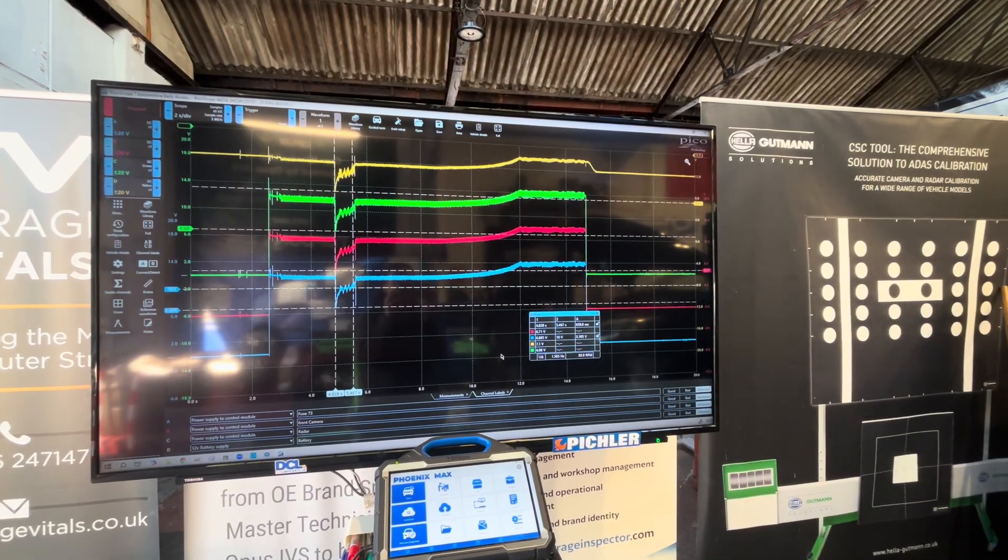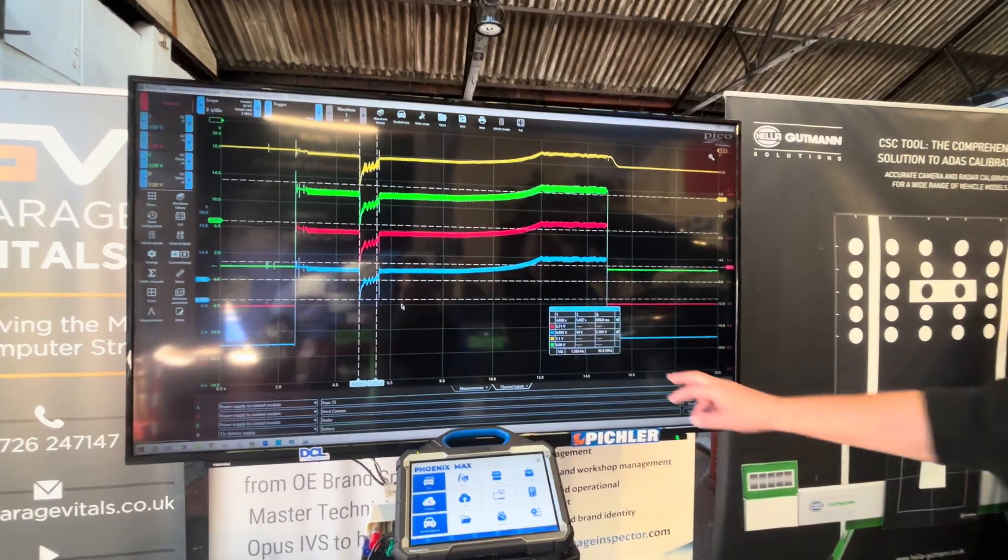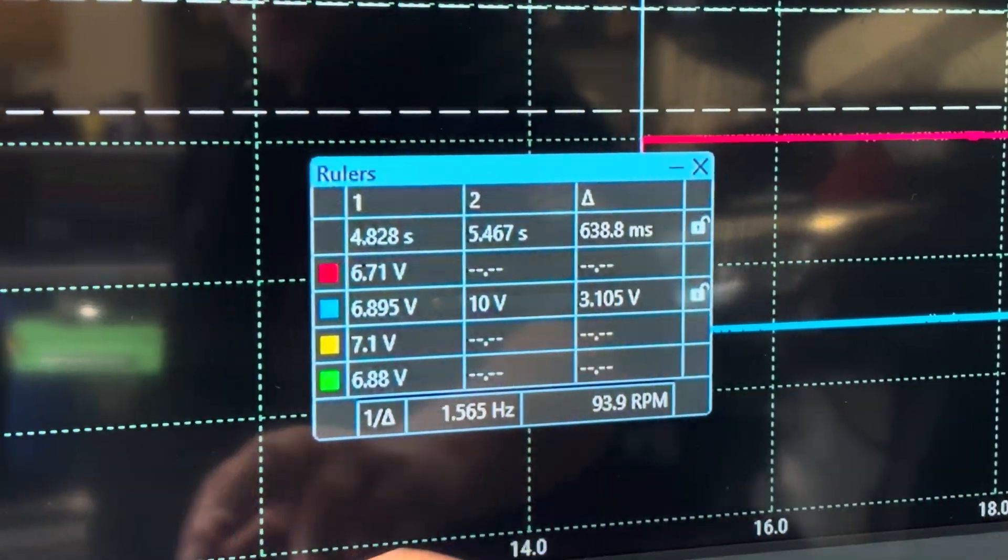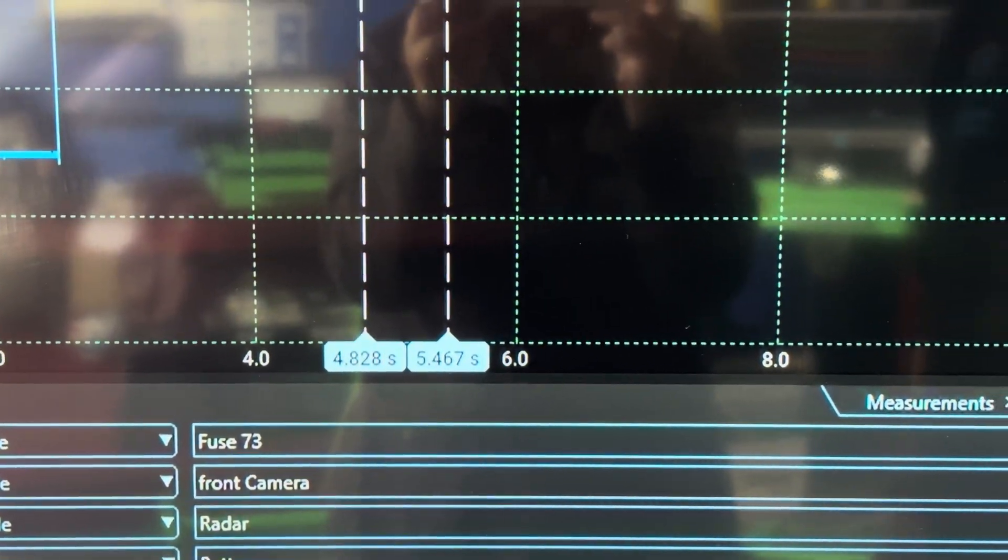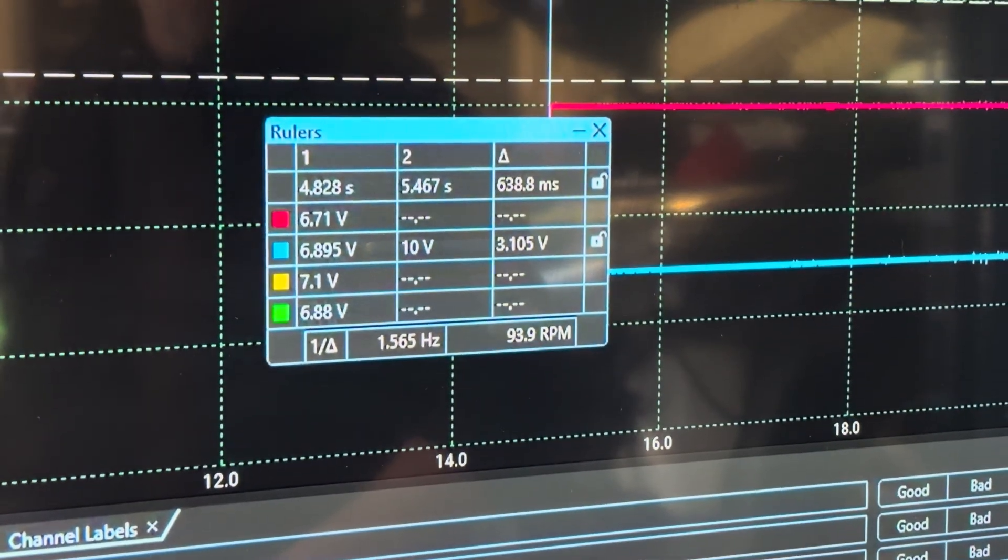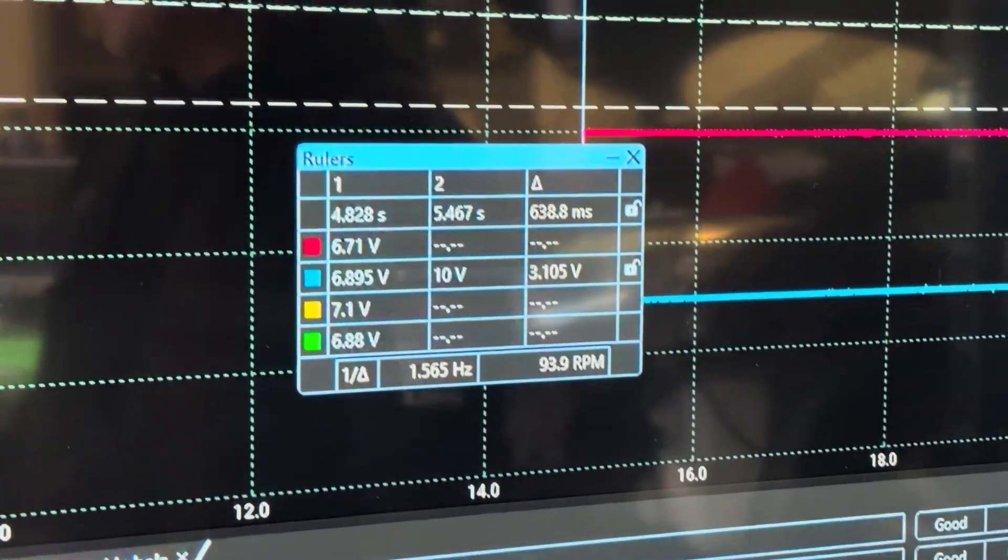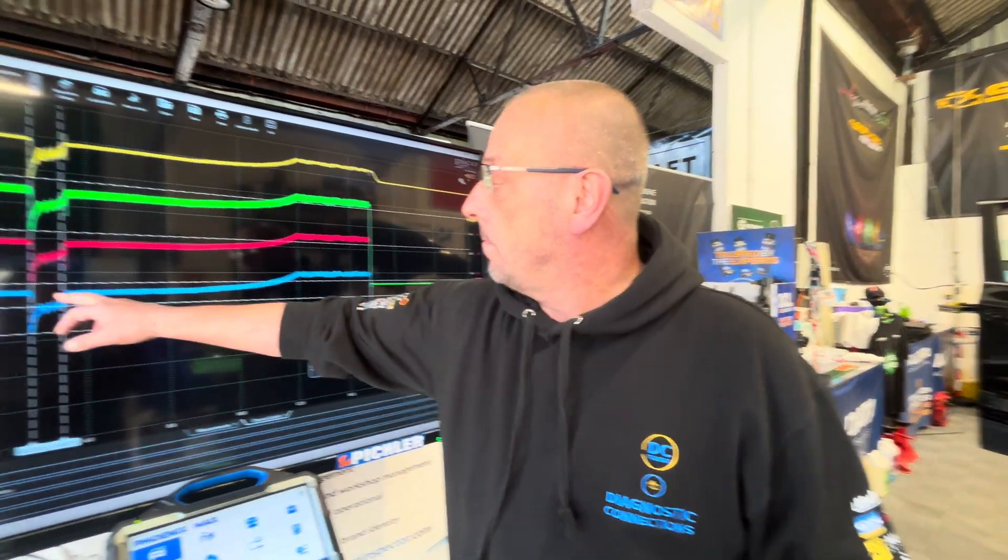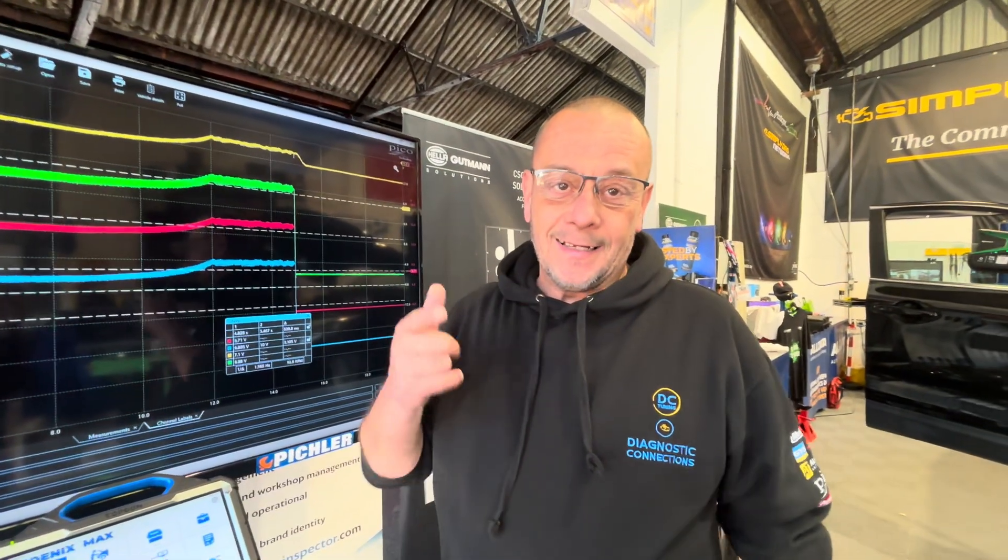10 volts, so there's a three volt difference. And it was, what's that, four, five, nearly a full second? 638 milliseconds, so nearly a full second. So that's within the DTC setting criteria, below 10 volts, but it's actually below battery voltage for a lot longer than that. So there's your problem, lady, as Erico would say.